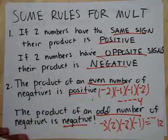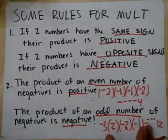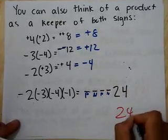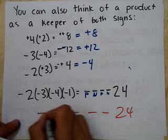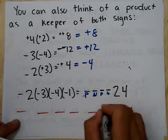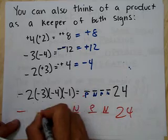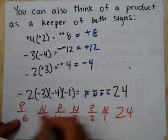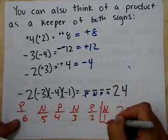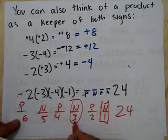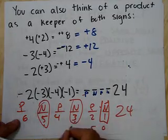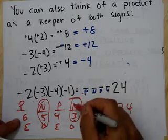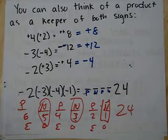Why does odd vs. even work? Notice the pattern: each additional negative flips the sign — negative, positive, negative, positive, negative, positive. That's the 1st, 2nd, 3rd, 4th, 5th, 6th negative. All the odd-numbered negatives end up on negative results, so an odd number of negatives gives a negative product, and an even number gives a positive.